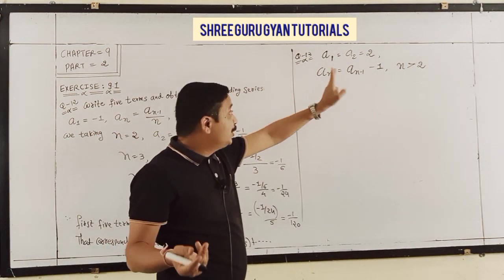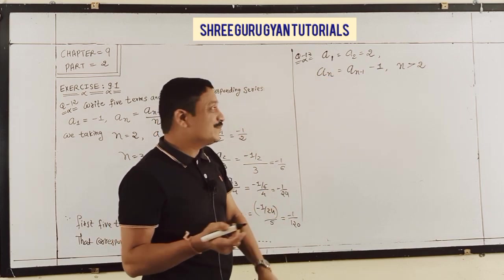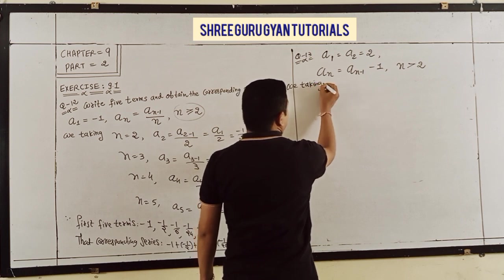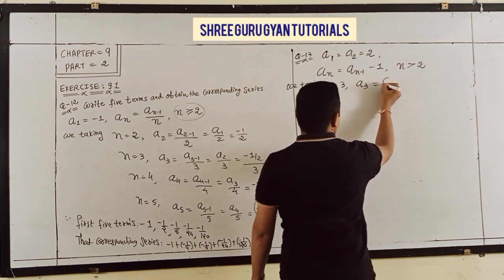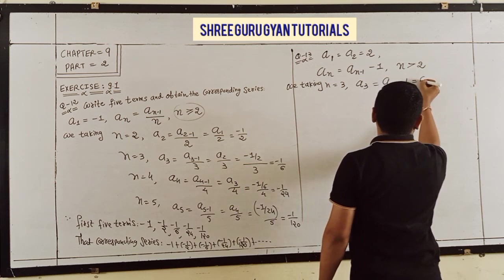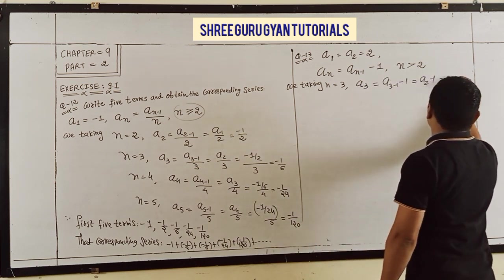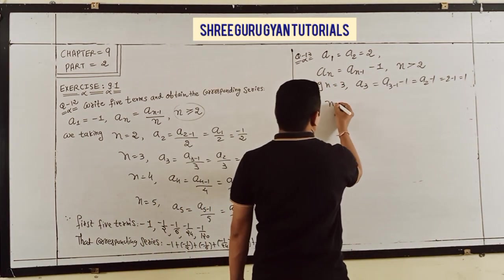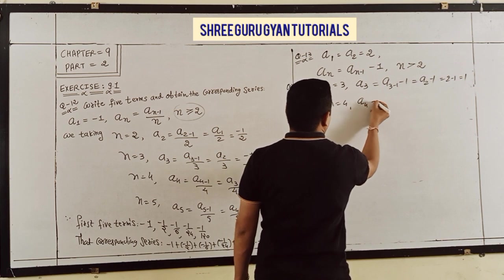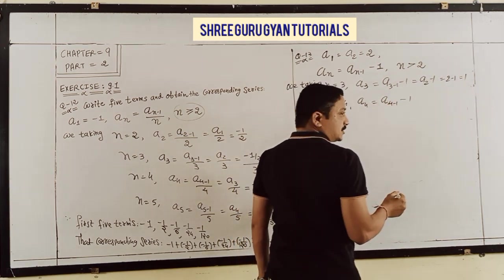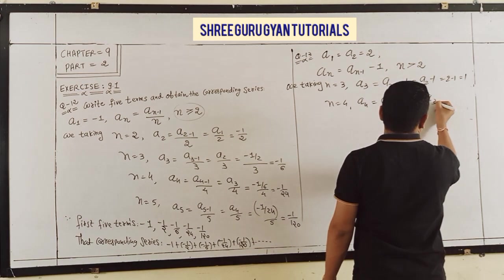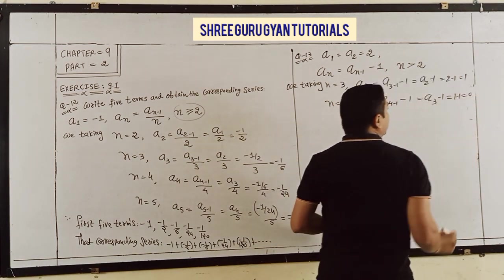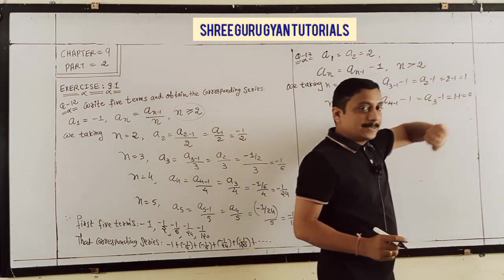For n = 3: a3 = a2 minus 1 = 2 minus 1 = 1. For n = 4: a4 = a3 minus 1. What is a3? A3 is 1, so a4 = 1 minus 1 = 0.